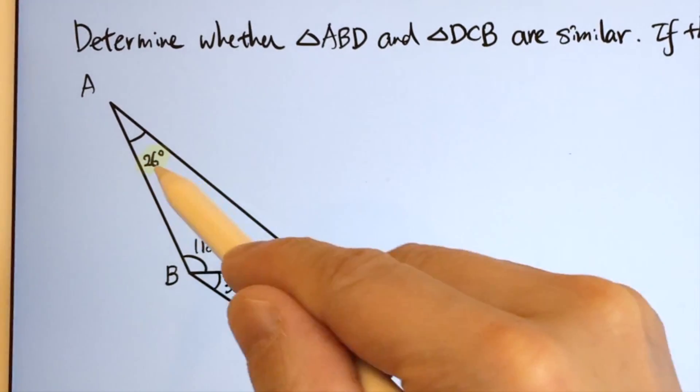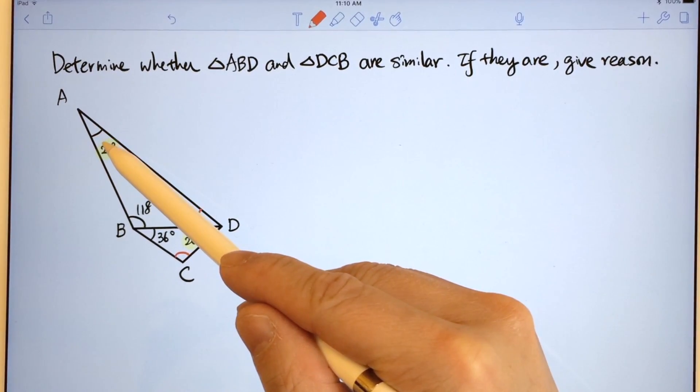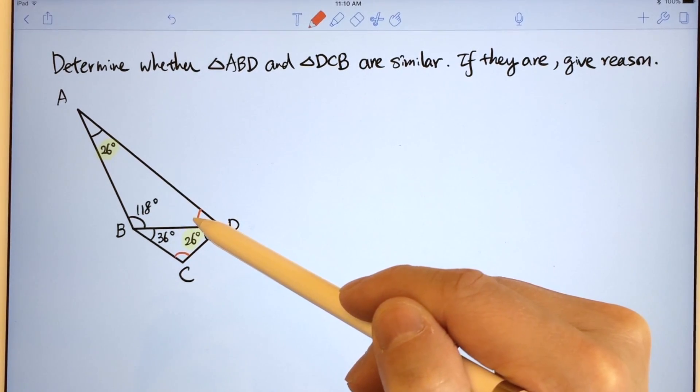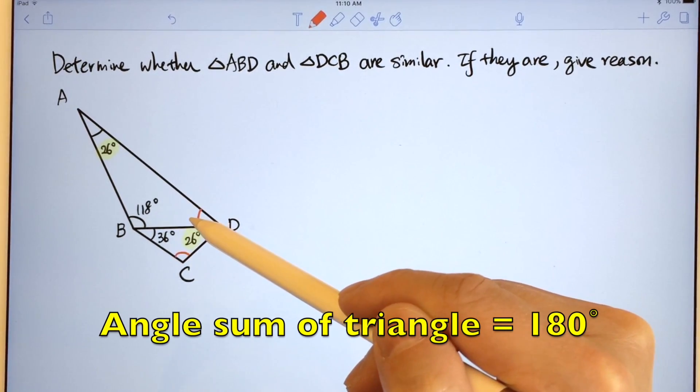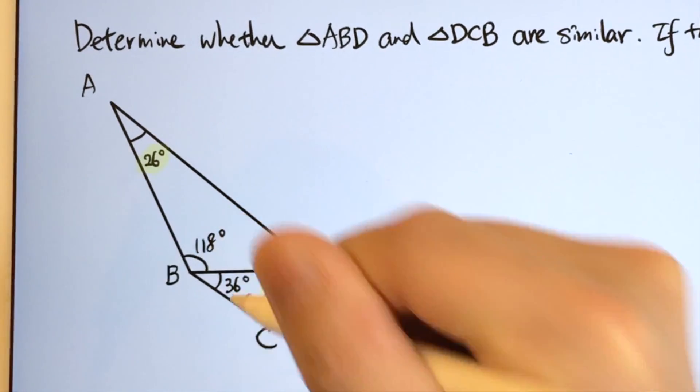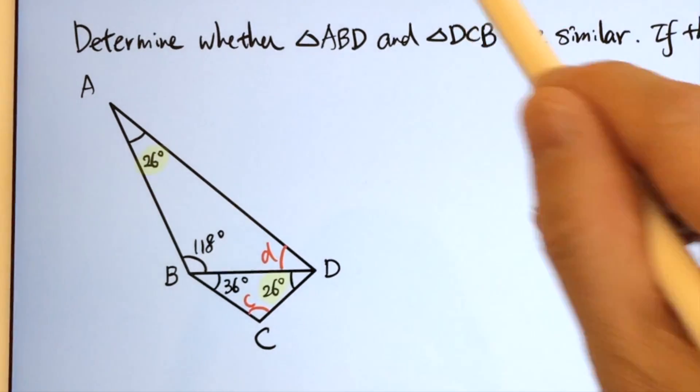So we can make use of the angle sum of triangle. Let's say 26 plus 118 plus this angle BDA should give a sum of 180 degrees. So we can mark the angles like this. This is small letter D, this is small letter C.